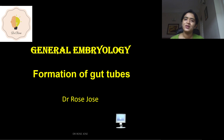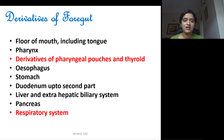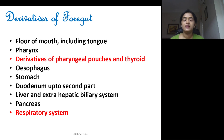Let's begin. Derivatives of the foregut: floor of mouth including the tongue, pharynx, derivatives of pharyngeal pouches and thyroid, esophagus, stomach, duodenum up to the second part — that part you have to remember. Then you have the liver and extra-hepatic biliary system, pancreas, and respiratory system. All these are derivatives of the foregut.